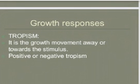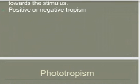Phototropism is a response to the stimulus of light. If the plant grows toward the stimulus of light, it is positive phototropism. If the plant grows away from the stimulus of light, it is negative phototropism. For example, roots grow downward, away from light — that is negative phototropism — and stems grow towards light, which is positive phototropism.